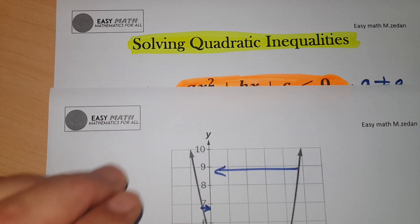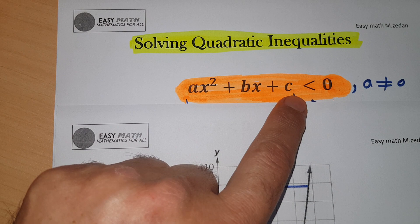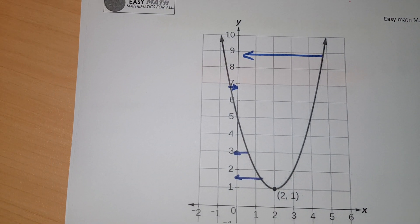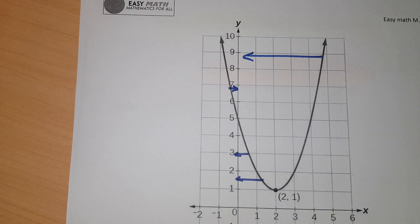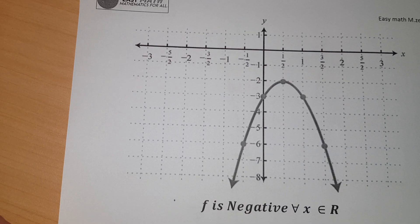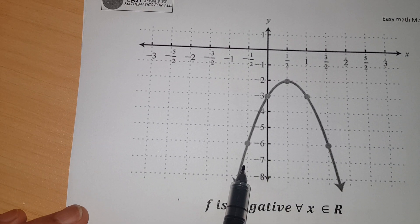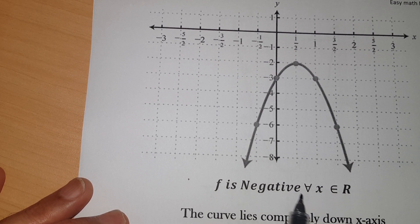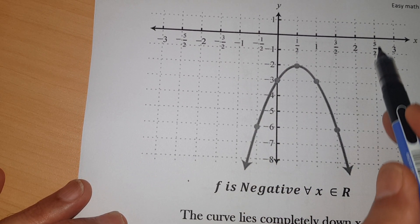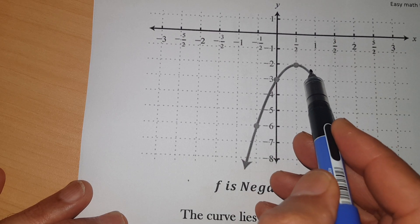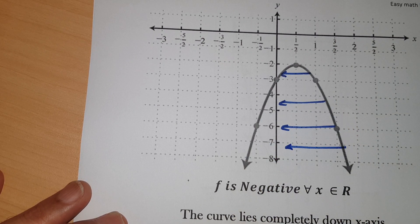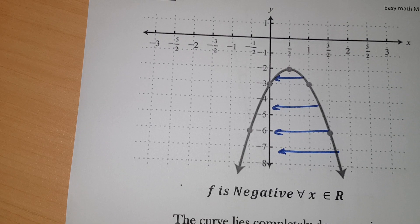The y-axis represents the value of the function, or the value of ax² + bx + c. If the curve of the function lies below the x-axis, the function is negative for all values of x — because the curve lies below the x-axis, corresponding to the negative part of the y-axis.